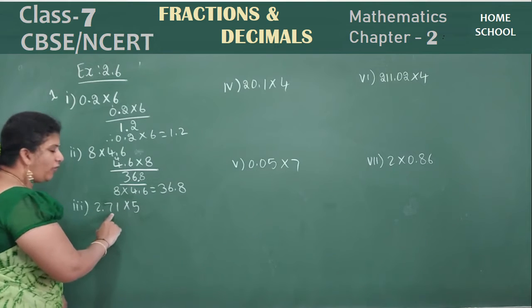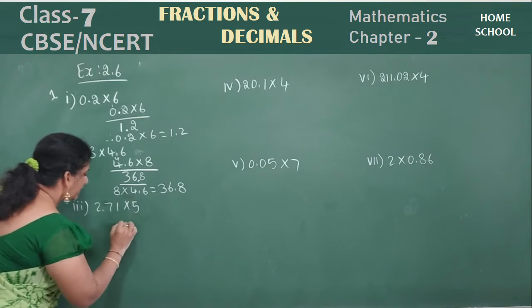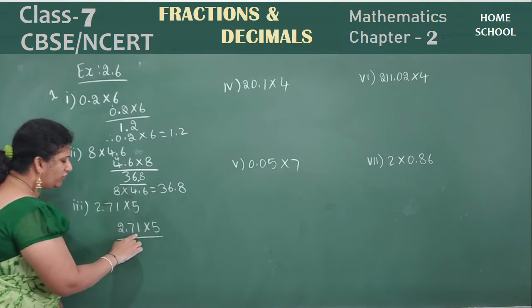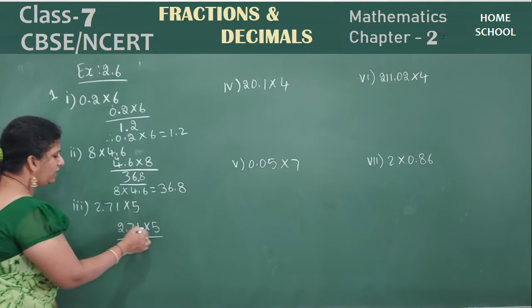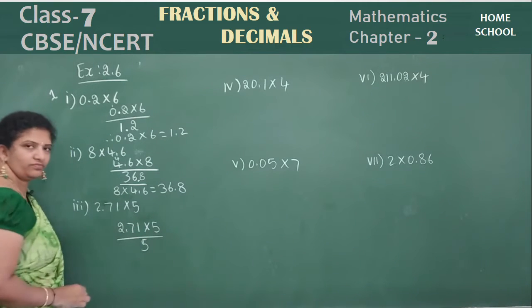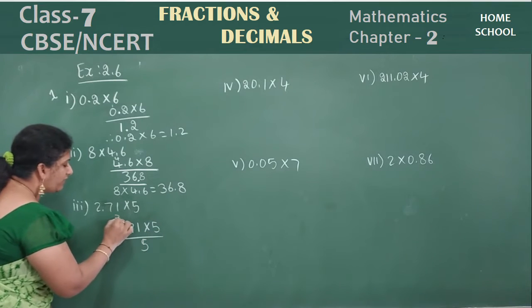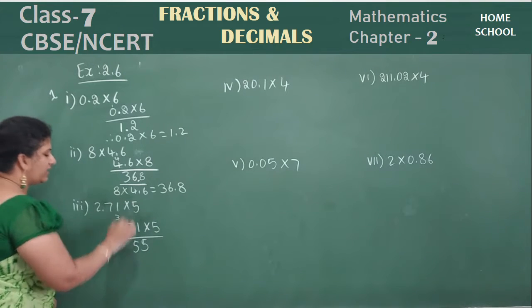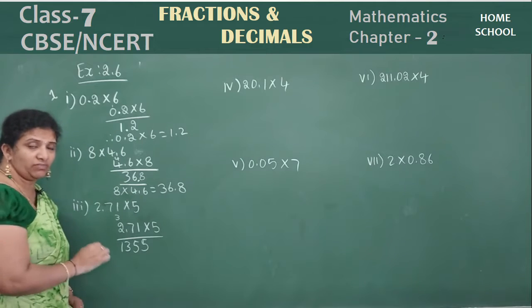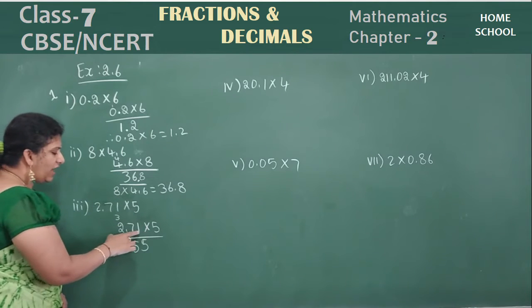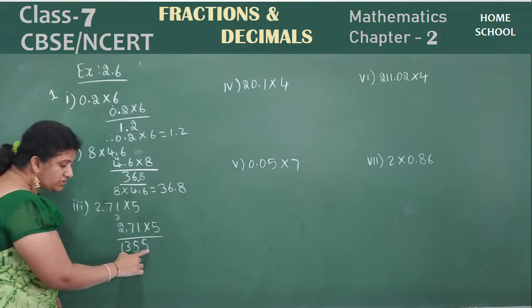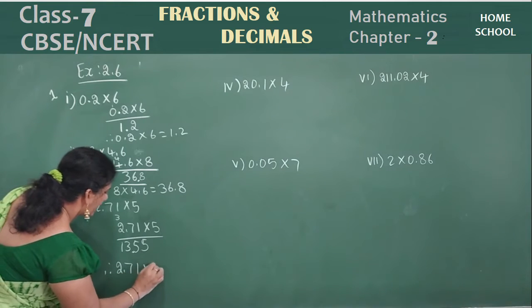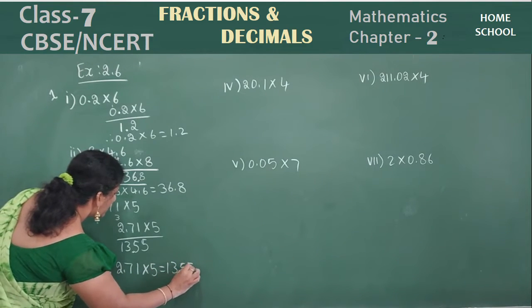Third question: 2.71 into 5. 5 ones are 5. 5 sevens are 35 — take 3 here. 5 twos are 10, plus 3 will be 13. Now where do I keep the decimal point? After 2 values, you have a point, so in the answer also, after 2 values, put a point. Therefore, 2.71 into 5 is equal to 13.55 is your answer.